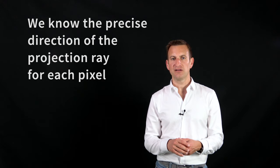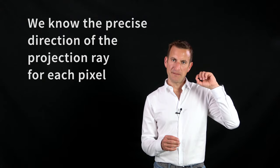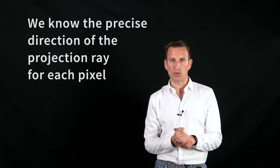The goal of calibration is that we know for every pixel the precise direction vector from the origin of our camera, so the projection center of our camera, into the 3D world.